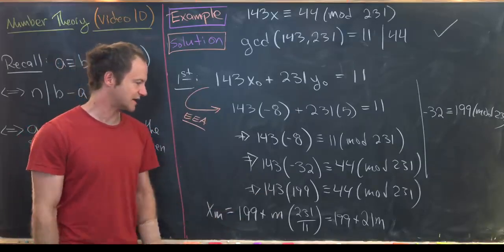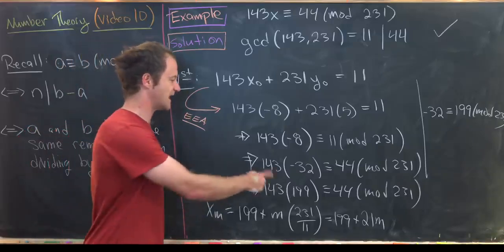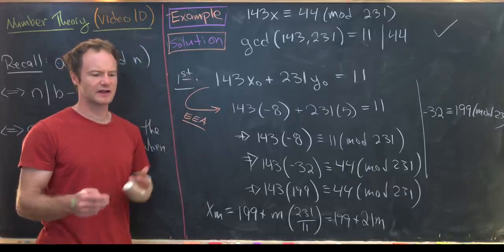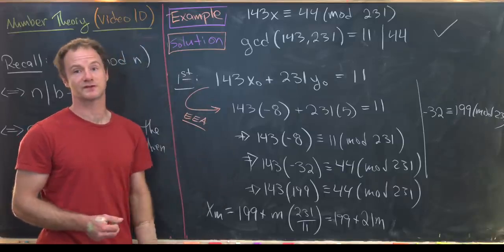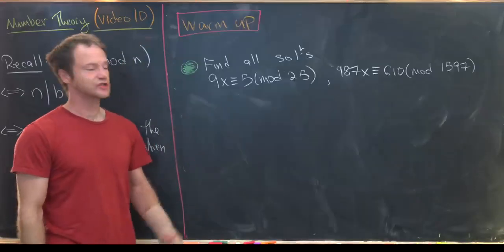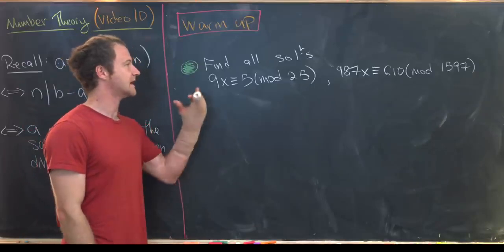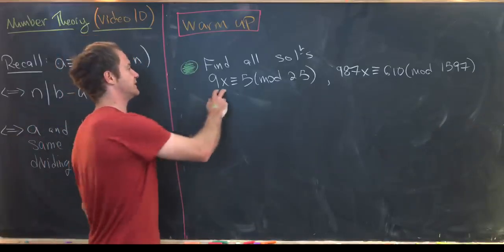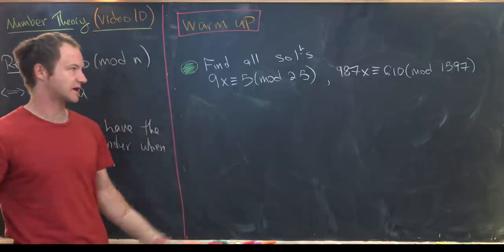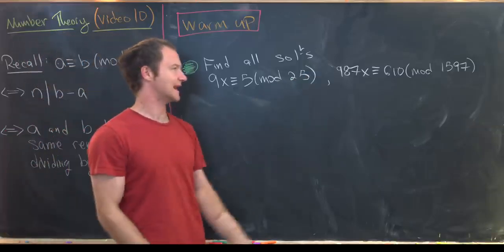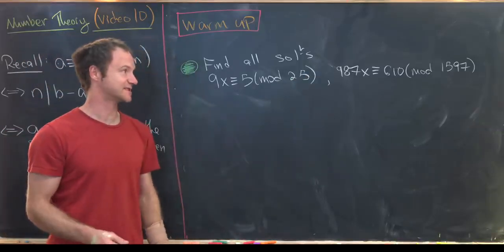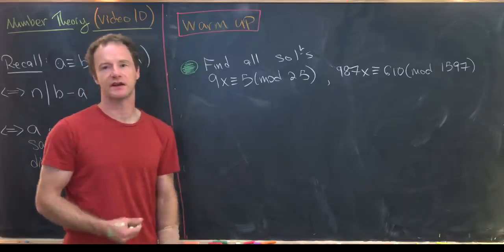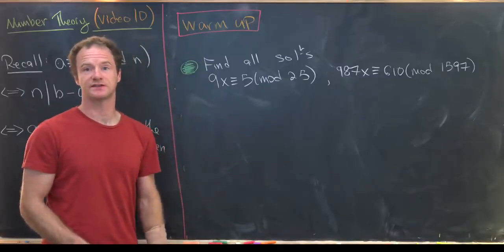I'll let you write down all the solutions from that. For warm-up exercises, solve these two congruences: 9x ≡ 5 (mod 25), and 987x ≡ 610 (mod 1597). And that's a good place to stop.